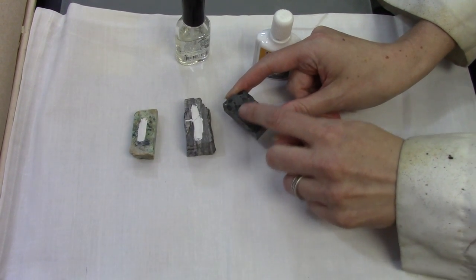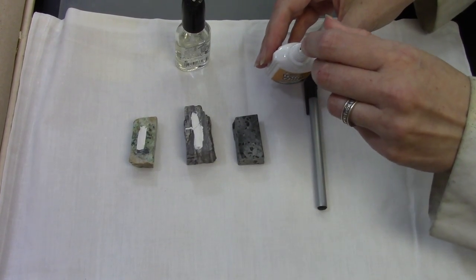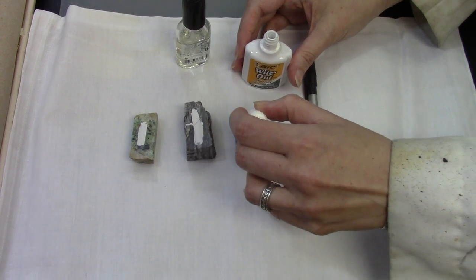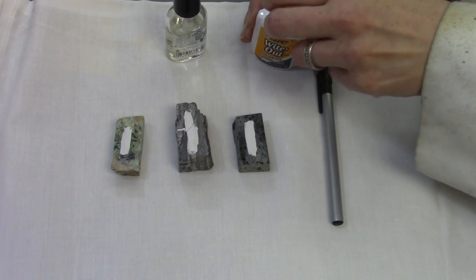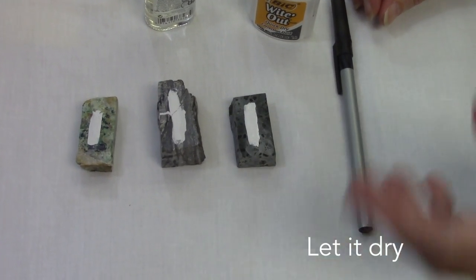For this rock, this is our polished side, so I'm going to turn it upside down and put a strip of whiteout or liquid correction fluid on the surface and wait for it to dry.